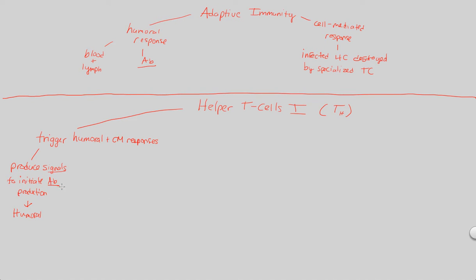If helper T cells produce signals that tell B cells to make antibodies, they're involved in the humoral arm of adaptive immunity. In addition, helper T cells affect cell-mediated responses by activating T cells that are very good at killing infected cells — cells too far into the infection to save. You have to kill them to prevent further infection. These are known as cytotoxic T cells, which kill infected cells.